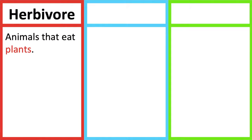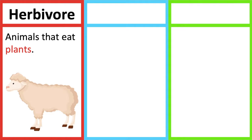Herbivores are animals that eat plants. For example, sheep eat plants, therefore they are herbivores. Carnivores are animals that eat meat.